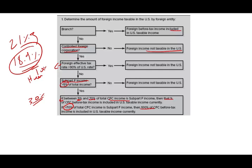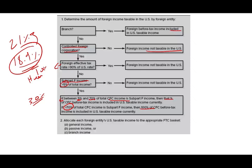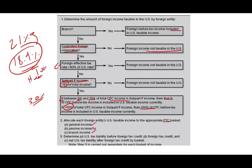After we determine whether they are taxable or not, we have to allocate each foreign entity's US taxable income to the appropriate foreign tax credit basket — we talked about this in the prior session. We have three baskets: general income, passive income, and branch income. Then we have to determine the tax liability before the foreign tax credit, and the net US tax liability after the foreign tax credit basket.